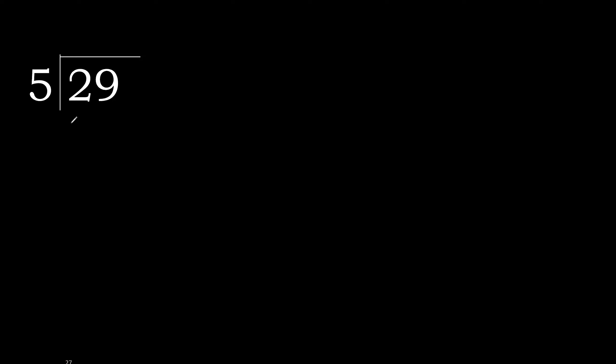29 divided by 5. 2 is less, therefore next digit: 9. 29 — 29 is not less, therefore we work with 29. 5 multiplied by which number is nearest to 29 but not greater?